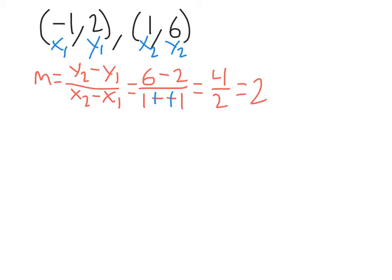Alright. So now we have to plug this into slope-intercept form. That's going to be y equals — and instead of m we write 2 — and then x plus b. Now, we're starting off just like we were in the other problem. The only difference is we have two points here. It doesn't matter which of the points you pick. However, this is an x and this is a y — you have to pick the x and the y from the same point. So if you pick this x, you have to pick this y. If you pick this x, you have to pick this y.